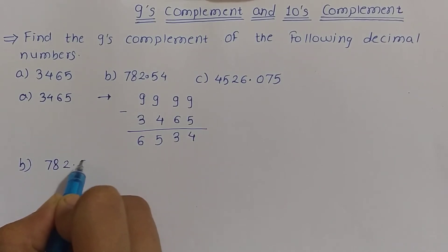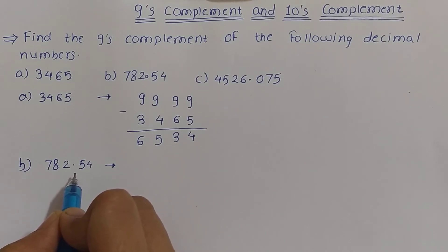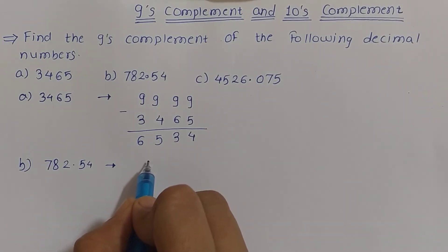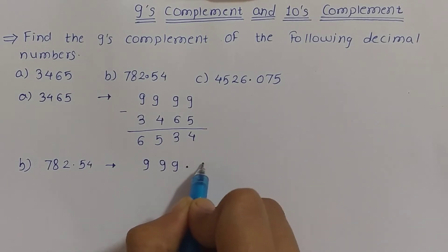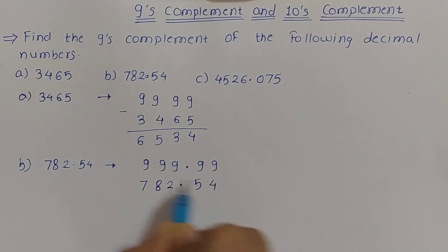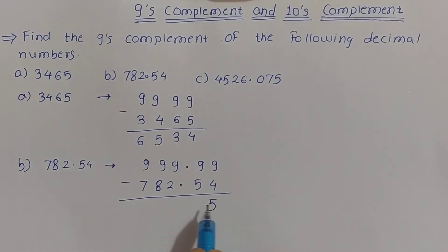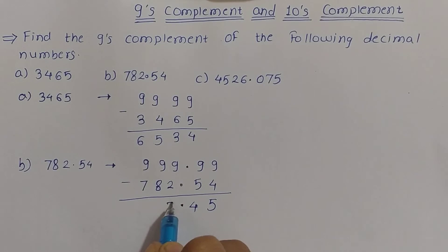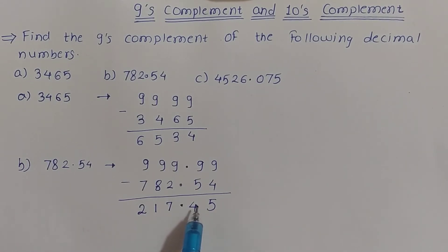The next number is 782.54. We will find the 9's complement of this decimal number, which is obtained by subtracting each digit from 9. There are 5 digits, so we subtract: 9-4 is 5, 9-5 is 4, 9-2 is 7, 9-8 is 1, 9-7 is 2. So 217.45 is the 9's complement of 782.54.